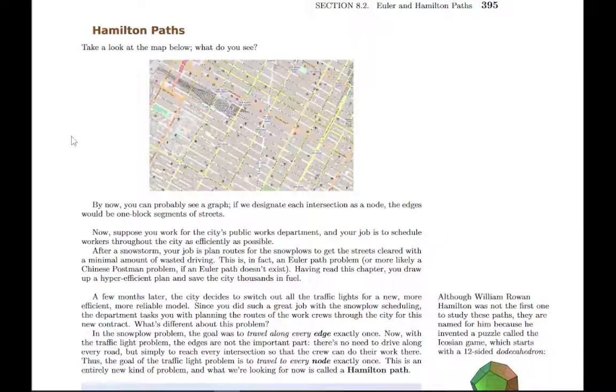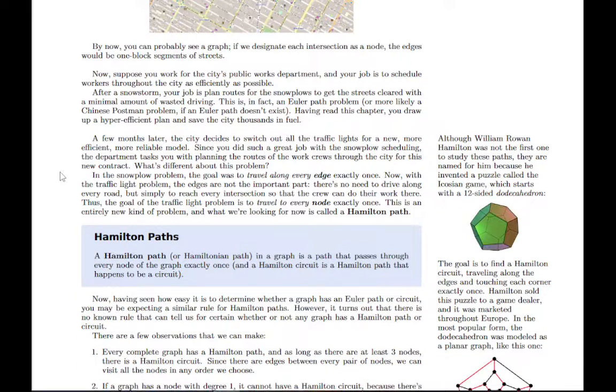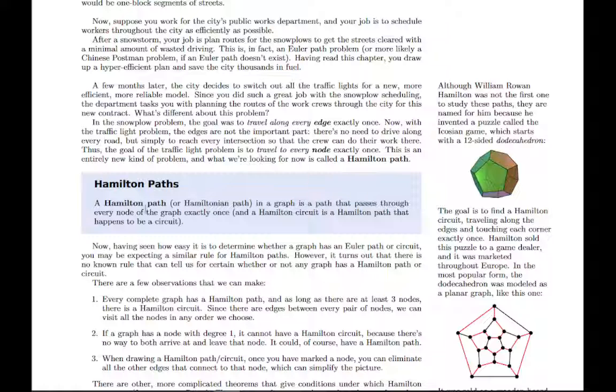So that's Euler paths and Euler circuits. Hamilton paths are a little different. You should read through this example and see how this can be useful, but in short a Hamilton path is one that passes through every node exactly once. So an Euler circuit uses every edge exactly once. A Hamilton path uses every node exactly once and might leave some edges unused.